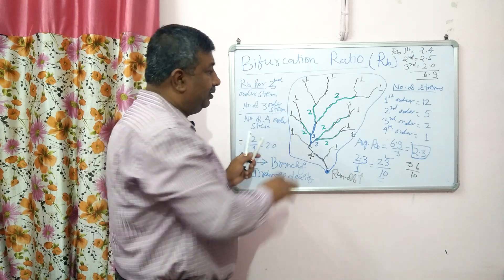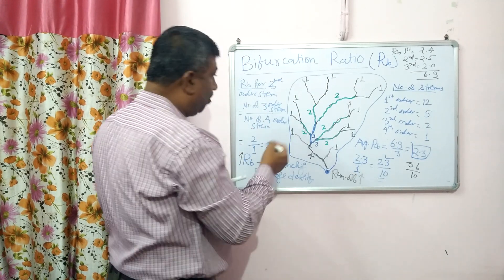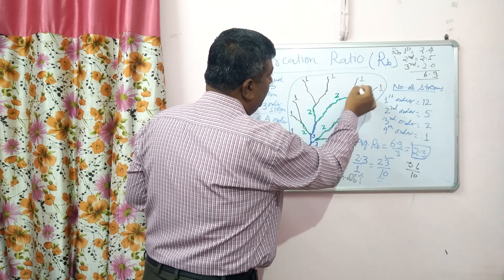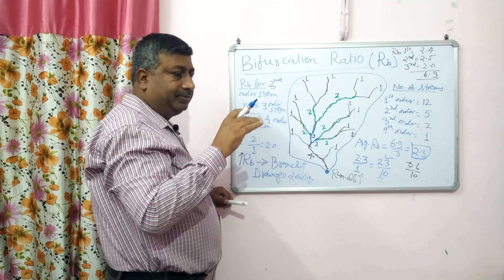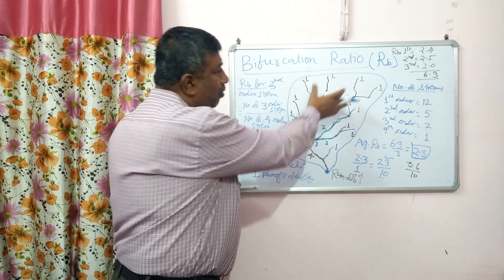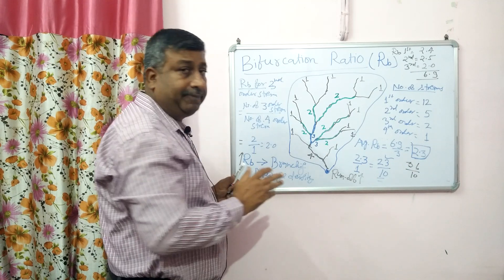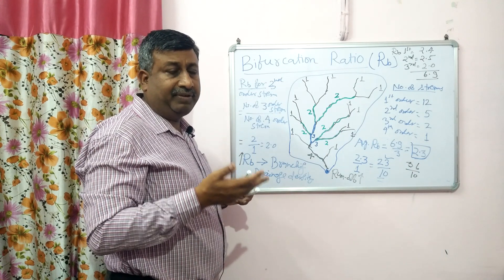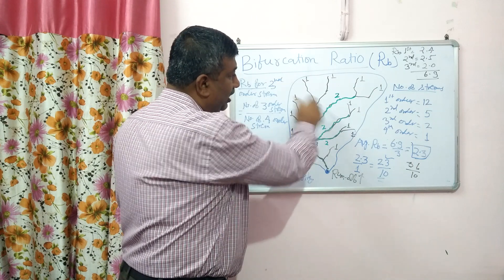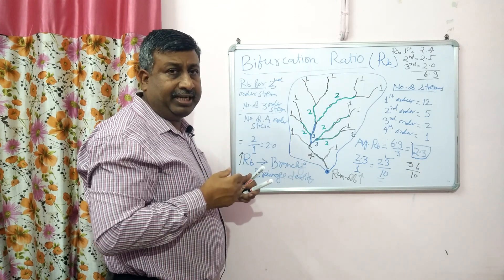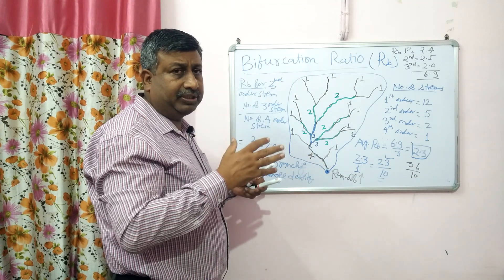High Rb value is not good. If there is more branching, it means there is structural disturbance — rocks causing poor infiltration, hard surface, poor vegetation, more slope. These factors obstruct and distort drainage and runoff, leading to more branching, more spreading of water, and more runoff. This is not good for the watershed.